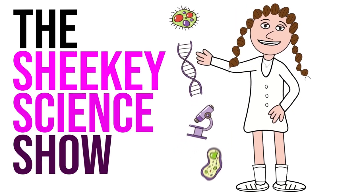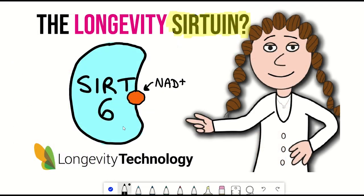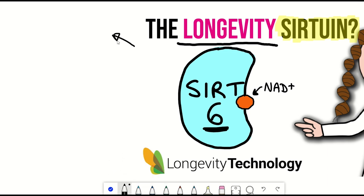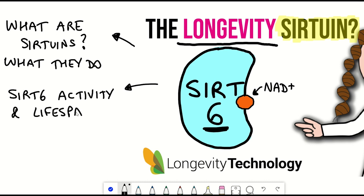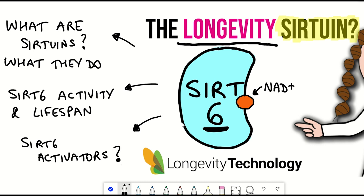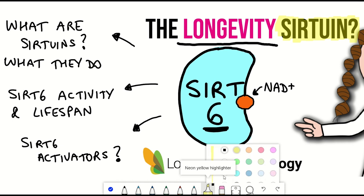Hello and welcome to the Shiki Science Show, where in this video we're going to talk all about Sirtuin 6 and why it's called the Longevity Sirtuin. First we'll introduce the basics of sirtuins, where you can find them in a cell and what their cellular activities are, and then we'll look at a series of studies that have shown a link between Sirtuin 6 activity and lifespan in different model organisms. And then that will lead us on to looking at Sirtuin 6 activators and why there's currently a lot of interest around finding molecules that can activate Sirtuin 6.